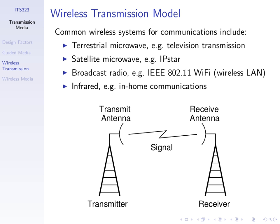Whether we send a signal wired or wireless, we start with some power level, some signal strength, and it gets weaker across distance. As the signal travels some distance — whether across a cable or through air — the signal strength or power gets weaker and weaker; it attenuates. We're going to look at by how much it attenuates.